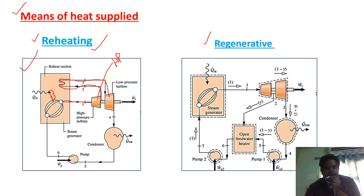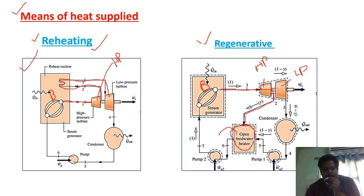This is what happens in reheating, and this type of turbine is called a reheating turbine. The next type is the regenerative turbine. From the boiler, steam enters the high-pressure turbine. After expansion through the high-pressure turbine, before entering the low-pressure turbine, some amount of steam is extracted and sent to an open feed water heater, which preheats the water before entering the boiler, reducing the energy required to convert water into steam.